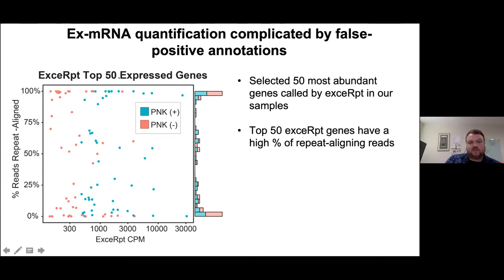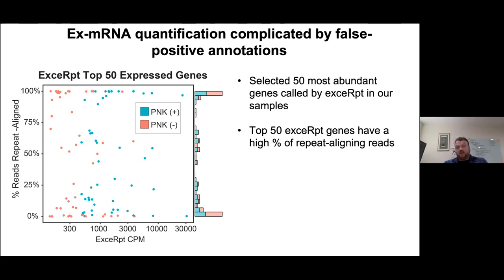If you look at the top 50 expressed genes from the Excerpt pipeline, many had 100% of their alignments contained within repetitive elements. This is saying there has to be extra care — not only to figure out which genome the RNA is coming from, but also to check endogenous annotations and ensure alignments are not to repetitive elements, to identify what's actually a bona fide messenger RNA transcript.